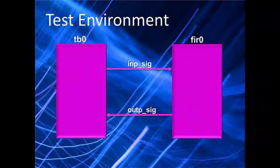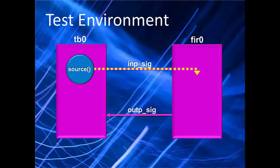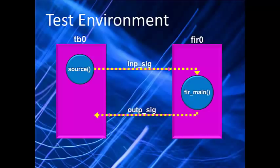Let's take a different look at our test bench and FUR module and just concentrate on the I/O. The test bench has a source thread which produces an input value that travels across the connection signal into the FUR where it's read by the FUR main thread. Likewise, FUR main produces an output whose value travels across the connection back to the test bench where it's read by the sync thread.